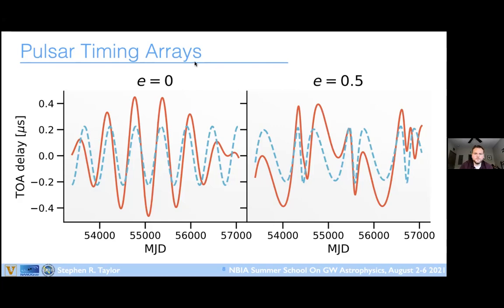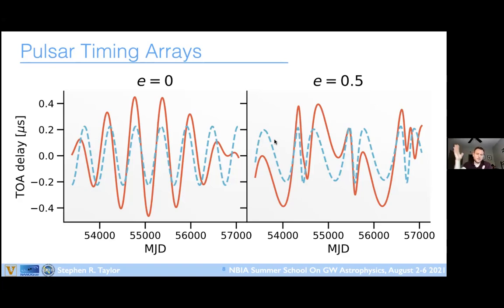A clarification from Christine: the orange waveform is a superposition of the gravitational wave passing the pulsar and the gravitational wave passing Earth. The blue dashed region is just the Earth term alone. The entire signal is ΔH_AB — the metric perturbation at Earth minus the metric perturbation at the pulsar — so the full signal is the Earth term minus the pulsar term, giving the red-orange curve. The formula is δH_AB = H_AB(Earth) − H_AB(pulsar).